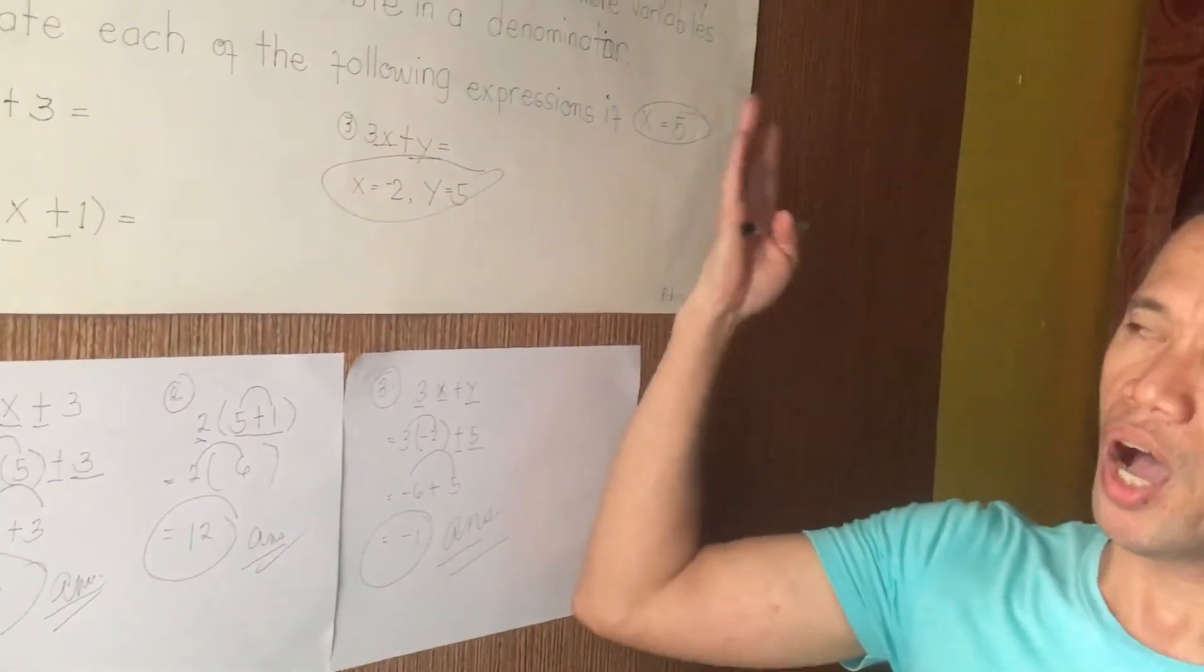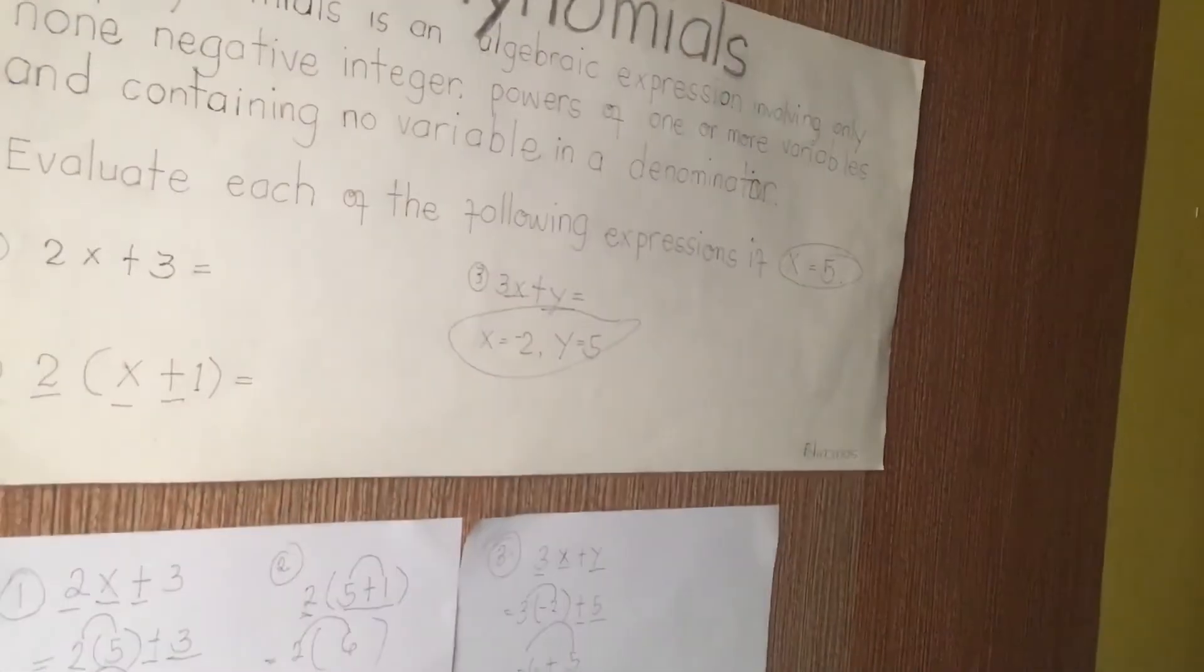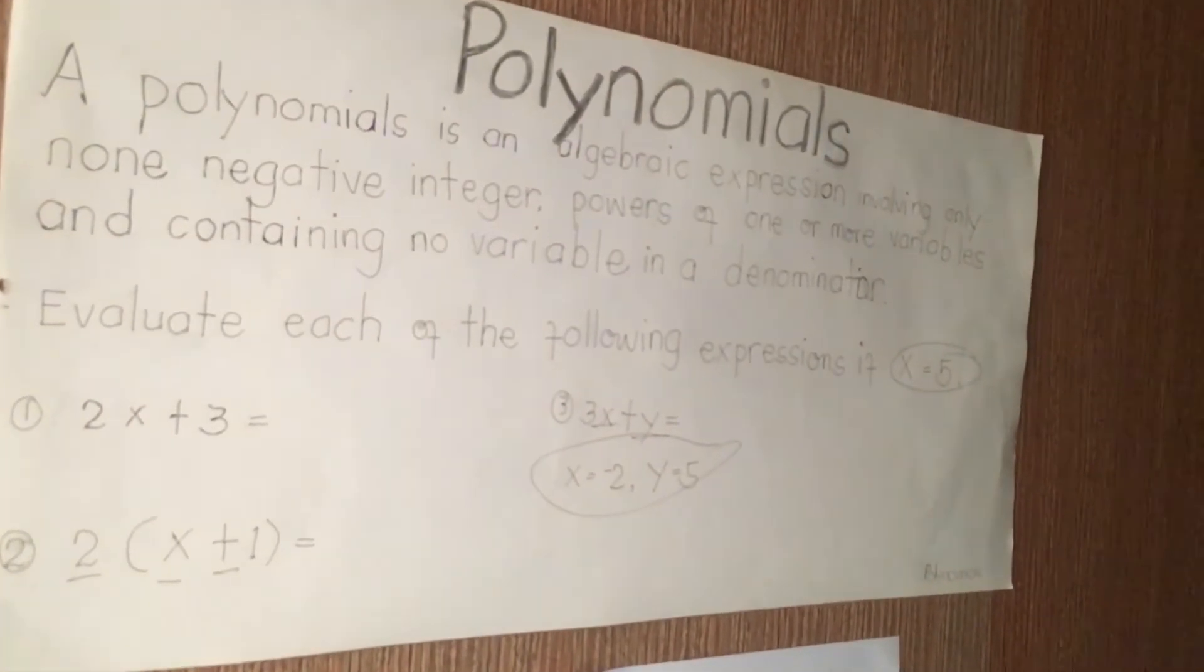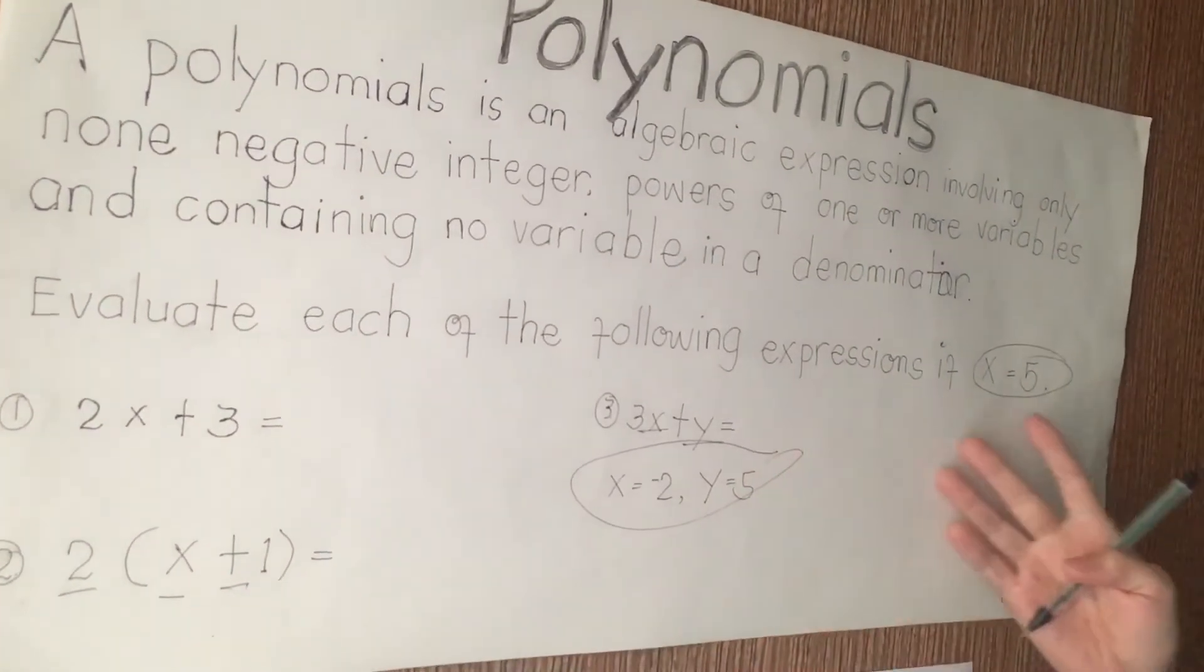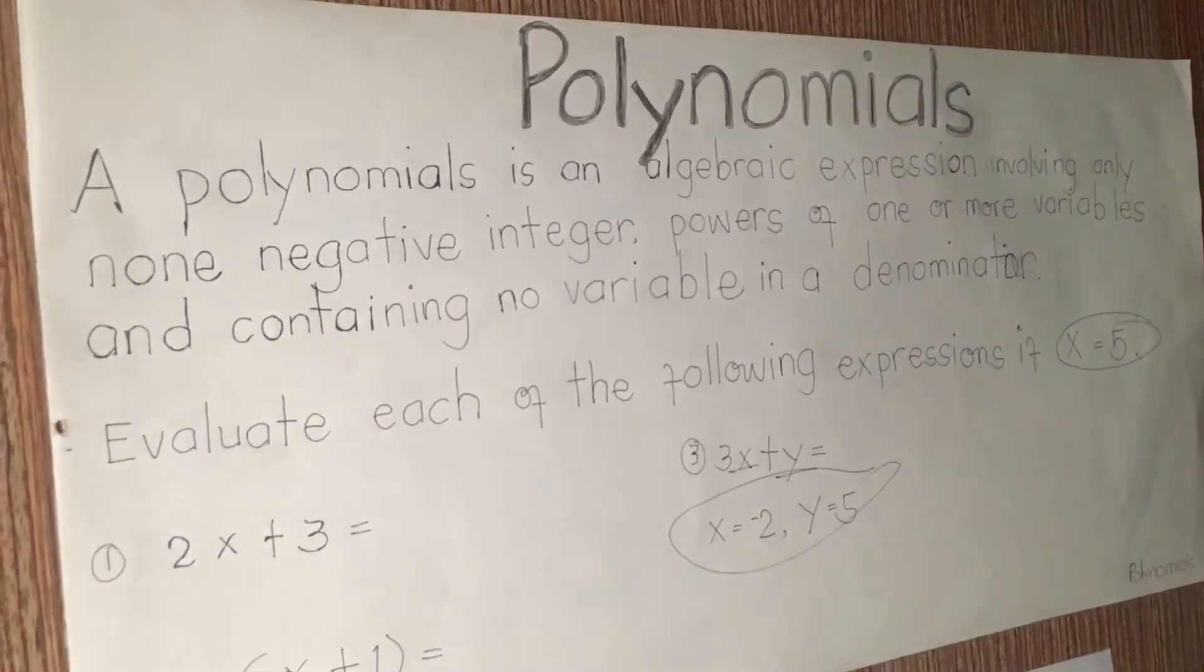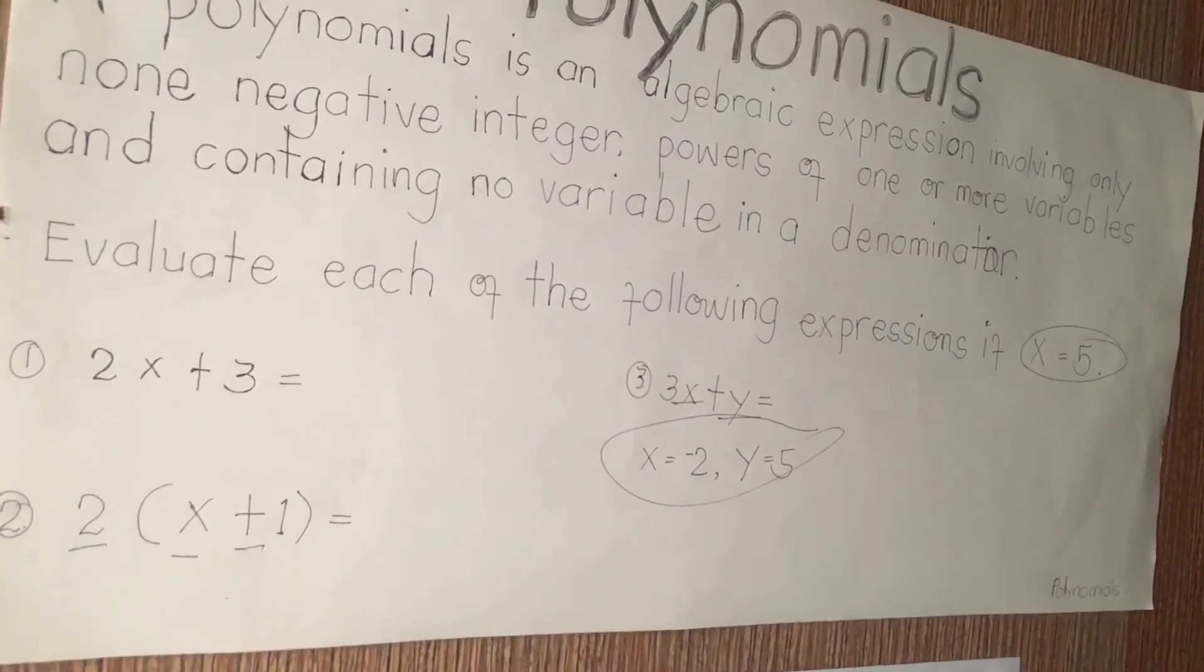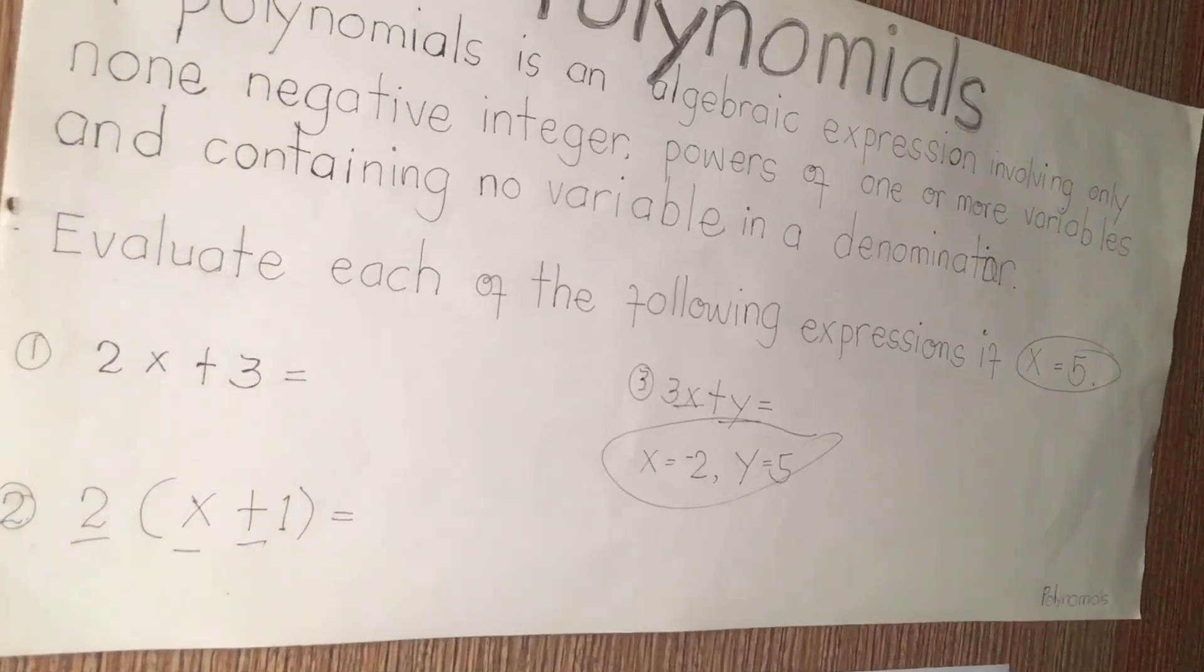Hope this class about polynomials helps. Hope students and viewers, you really understand how to solve algebraic expressions. Algebraic expressions are composed of monomial, binomial, and trinomial. Monomial refers to 1 term. Binomial refers to 2 terms. Trinomial refers to 3 terms. Once again, good day and so long. See you for my next videos. Bye-bye. Thank you for watching.